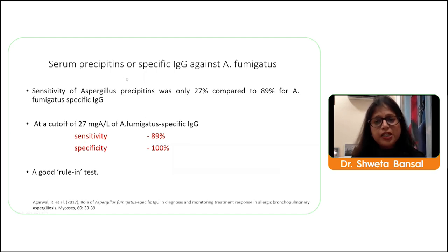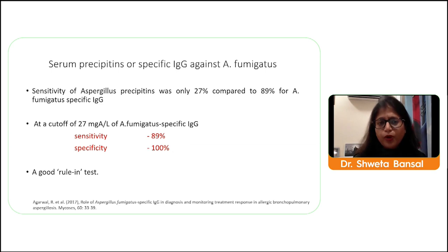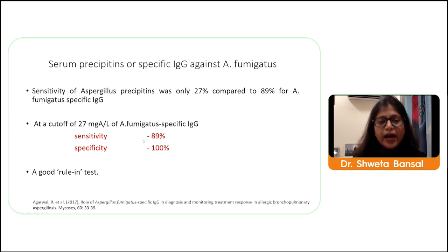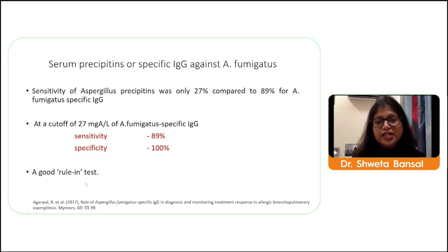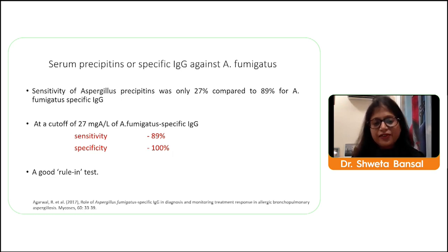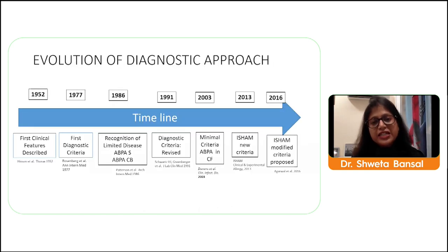Serum precipitin has been an important investigation tool for decades, but recent studies show its sensitivity is only 27 percent. In contrast, specific IgG against aspergillus — its surrogate marker — has sensitivity of 89 percent and specificity of 100 percent. Therefore, specific IgG has now overruled serum precipitin, and the latest ISHAM criteria have removed serum precipitin from diagnostic criteria, including only specific IgG due to its superior sensitivity and specificity.